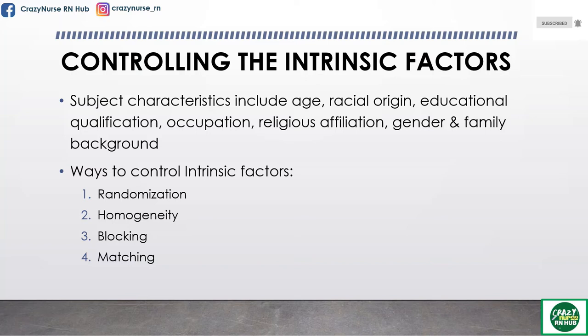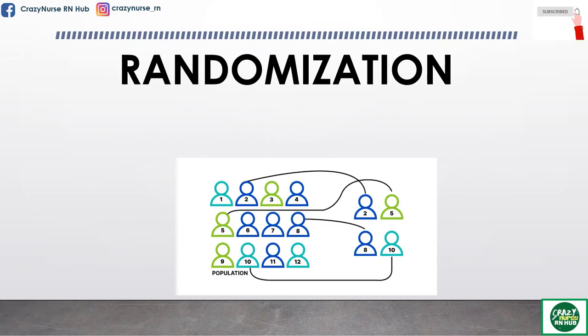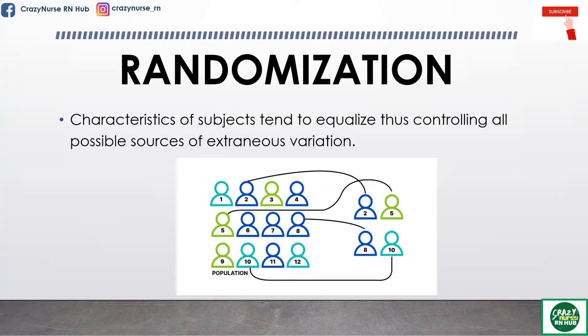There are four ways. First, we have randomization. Second is homogeneity. Blocking is the third one. And lastly, we have matching. In selecting subjects by random, characteristics of subjects tend to equalize, thus controlling all possible sources of extraneous variation.